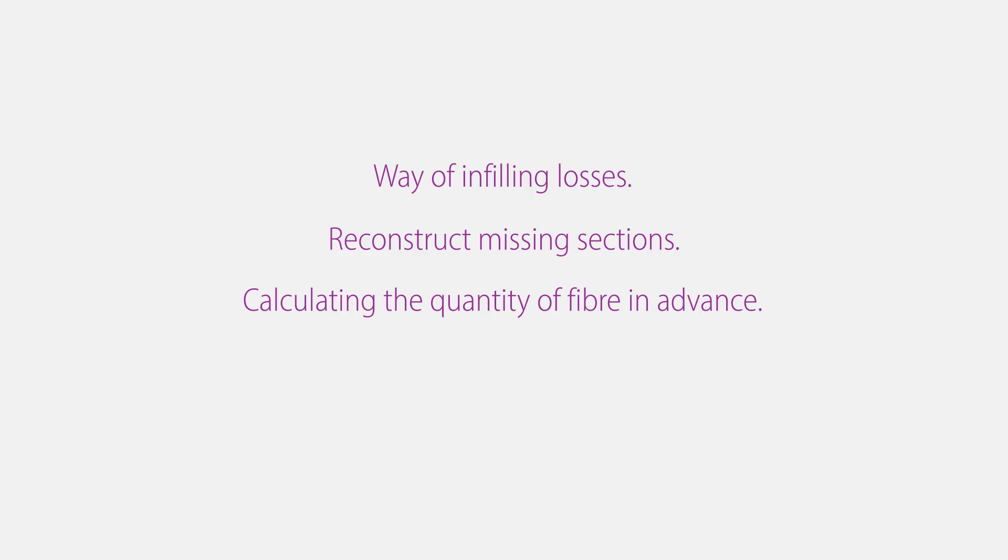Manual leaf casting is a way of infilling losses. A fiber suspension is used to reconstruct missing sections in the paper. The quantity of fiber required can be calculated in advance. For sensitive objects, losses can be infilled using custom fitted supplements created with a template.